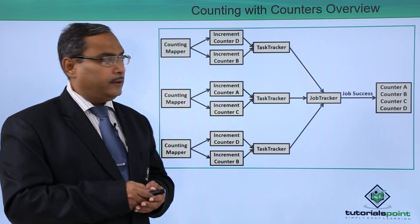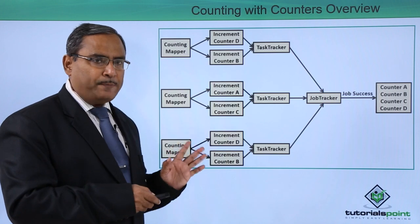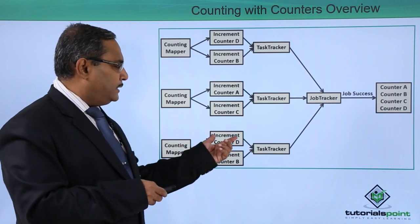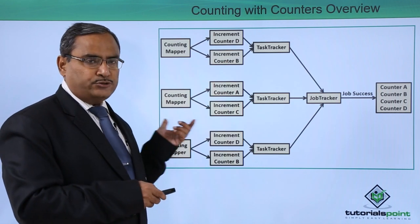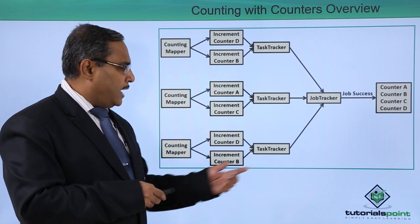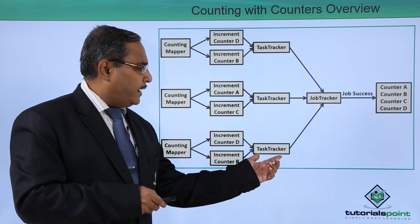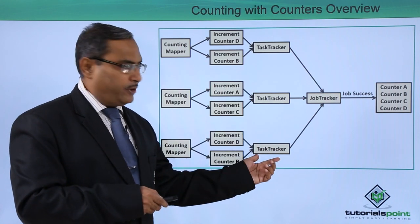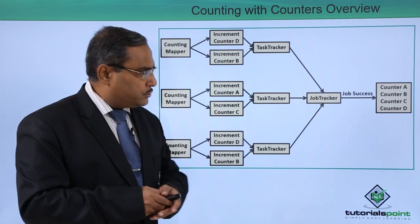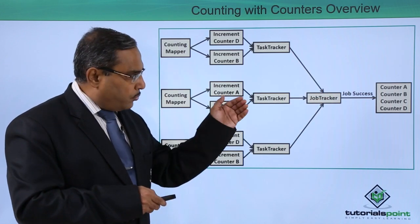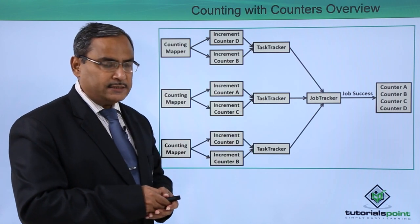Here is the diagram. We have the counting mapper tasks with increment counter D and increment counter B. The mappers produce the required outputs, which are made available to the task tracker. From the task tracker it goes to the job tracker, which produces the final counted outputs — A, B, C, D — and the job will have success.